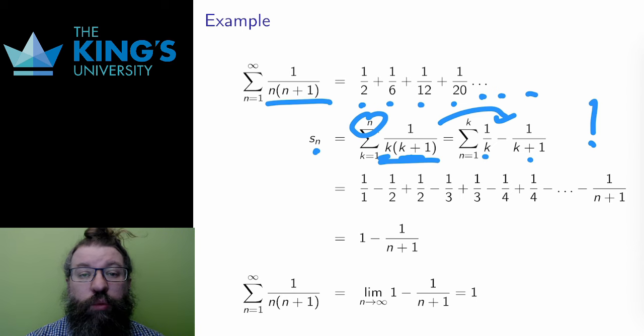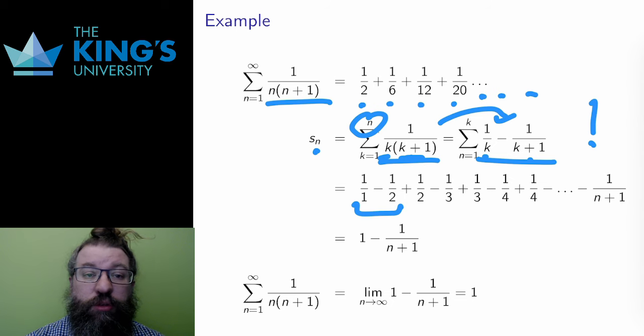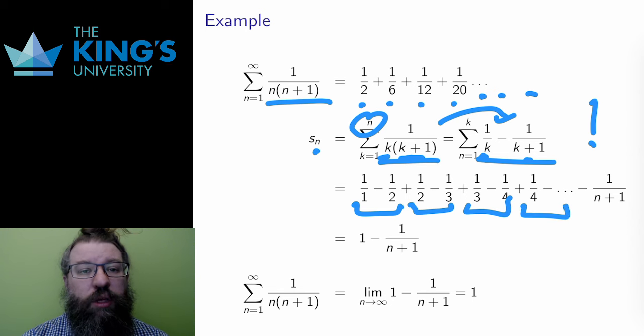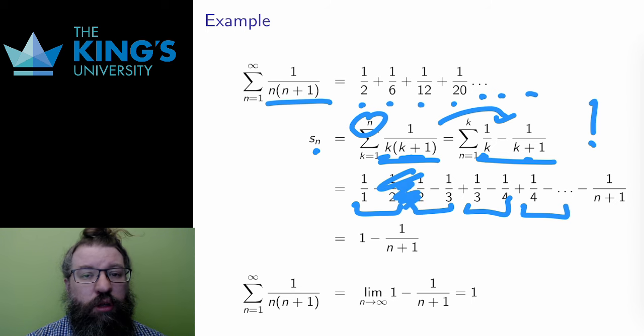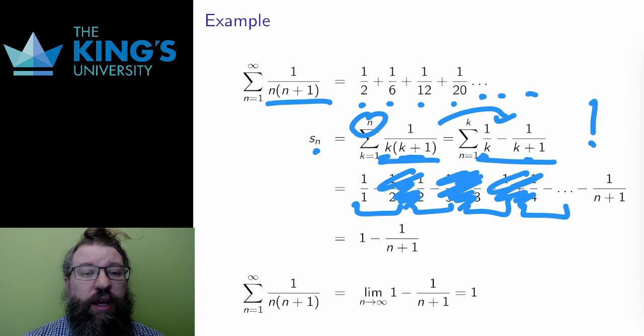If I start at k equals 1, I get 1 minus 1 half. Then k equals 2, I get 1 half minus 1 third. Then k equals 3, I get 1 third minus 1 quarter, and so on. And now look at what happens to these terms. The negative 1 half and positive 1 half here cancel out. Likewise, the negative 1 third and positive 1 third cancel. The negative 1 quarter and positive 1 quarter cancel, and so forth and so on.